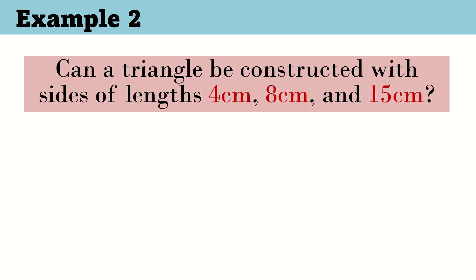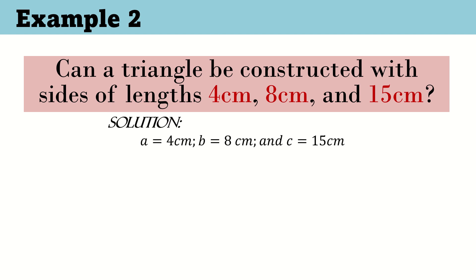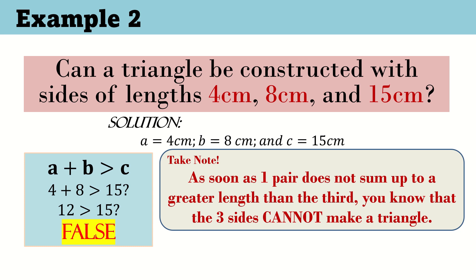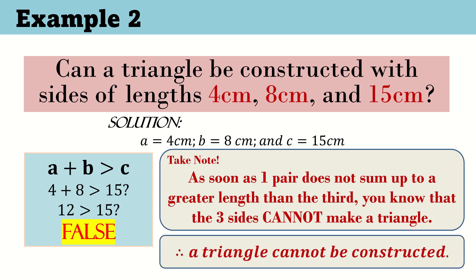Let's have another example. Can a triangle be constructed with sides of lengths 4 cm, 8 cm, and 15 cm? Let's apply the triangle inequality theorem. First, let's add the 1st and 2nd sides, 4 and 8, and compare to the 3rd side, 15. Four plus 8 is 12. Is 12 greater than 15? No — 12 is less than 15. It did not satisfy the inequality and will not satisfy the triangle inequality theorem. Therefore, a triangle cannot be constructed with side lengths 4, 8, and 15.